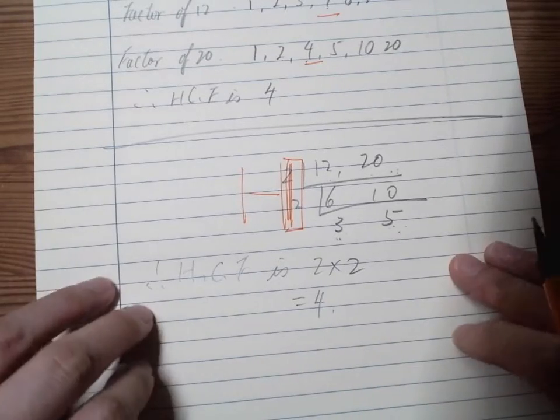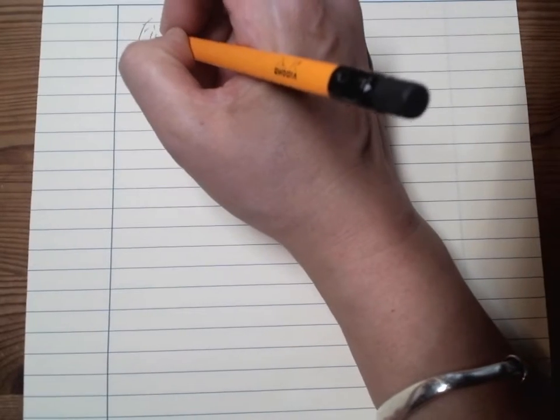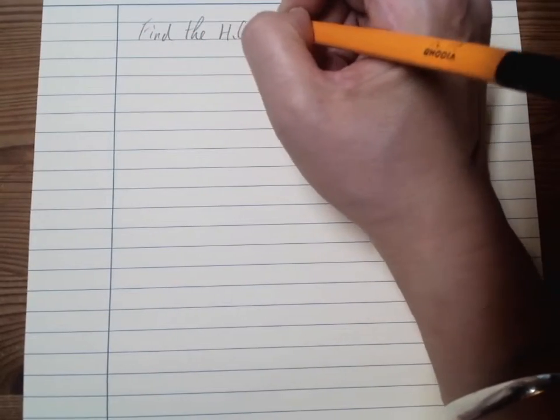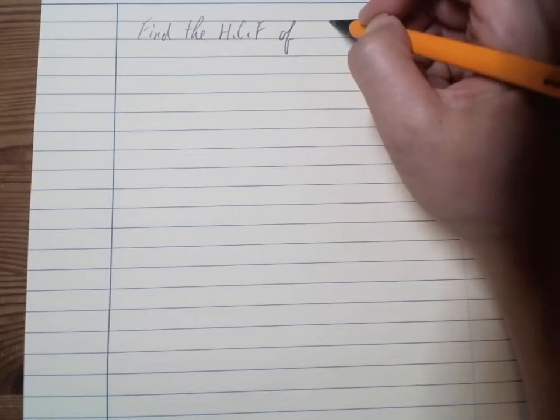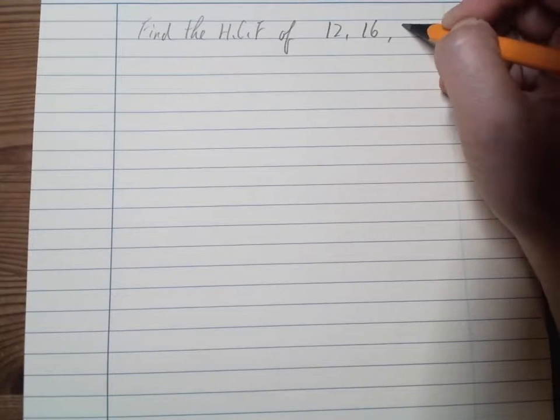Now let's try a three number common type factor, see how it goes. So yeah, so find the HCF of say 12, 16, and 30.